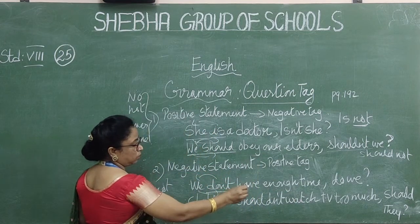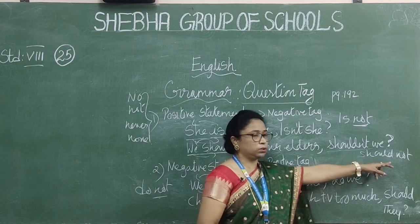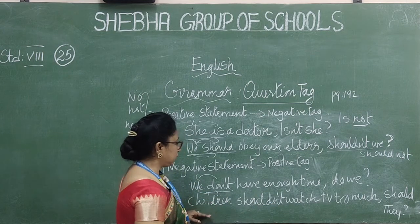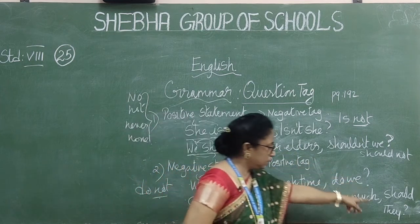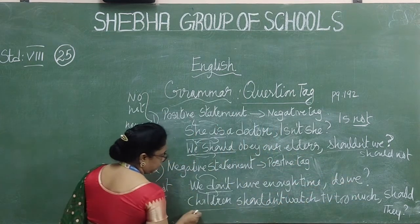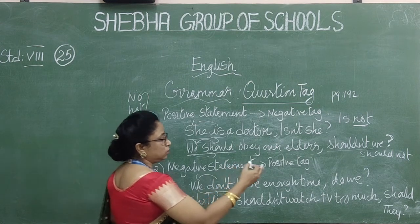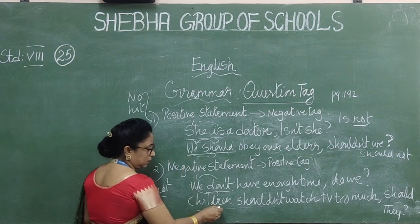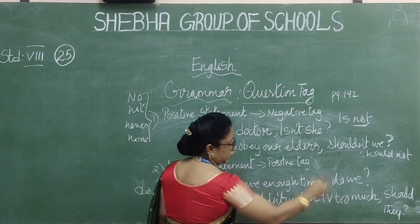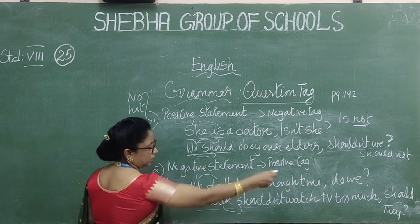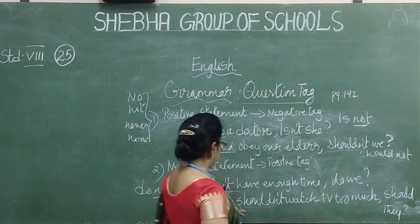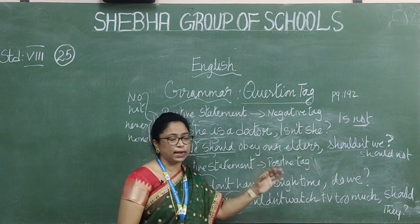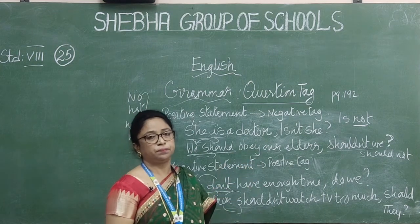Next example: 'Children shouldn't watch TV too much.' 'Shouldn't' means 'should not' — negative statement. So it takes a positive tag. 'Children' is plural, so it becomes 'they'. Interchange: 'should they'. Answer: 'Children shouldn't watch TV too much, should they?' The question mark at the end of the tag is very necessary.